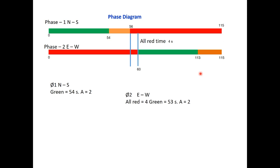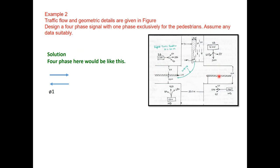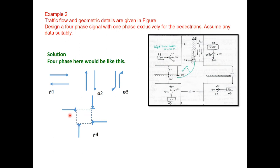In the second problem we will take a pedestrian phase and turning movements. Example 2: traffic flow and geometric details are given. Design a four-phase signal with one phase exclusively for pedestrians; assume any suitable data. The four phases are: phase 1 — east-west all three movements; phase 2 — north-south straight and left turns; phase 3 — right turns from north and south; phase 4 — pedestrian phase when all vehicular traffic is stopped.